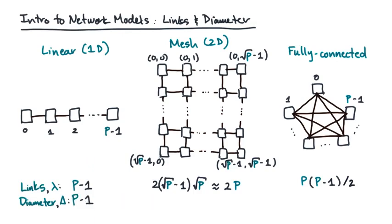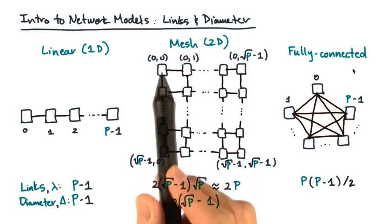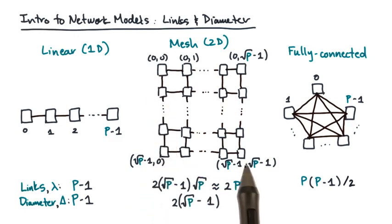What about the mesh? The longest shortest path is the one that connects either of these endpoints. The distance is just the Manhattan distance. That's basically root P-1 followed by root P-1 or 2 times root P-1 links.